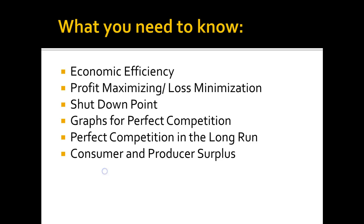Here's what you need to know for this chapter: what economic efficiency is, what the profit-maximizing and the loss-minimizing level of output is, what the shutdown point is, what a perfect competition graph looks like, how perfect competition reacts in the long run, and what consumer and producer surpluses look like in perfect competition.